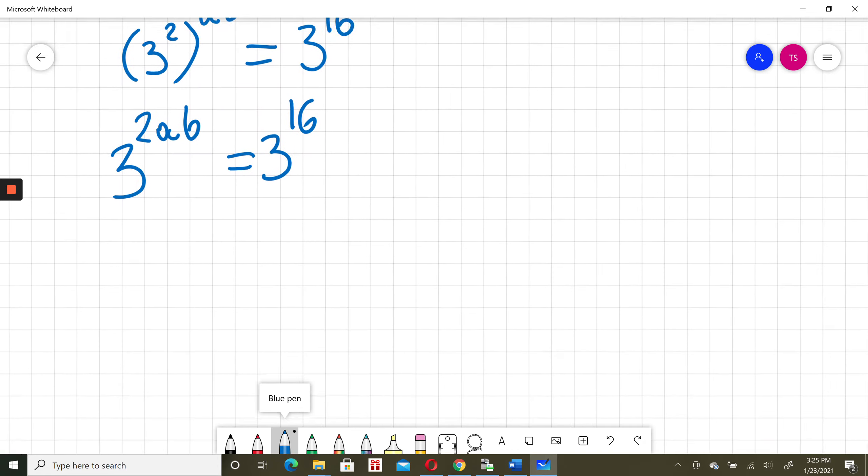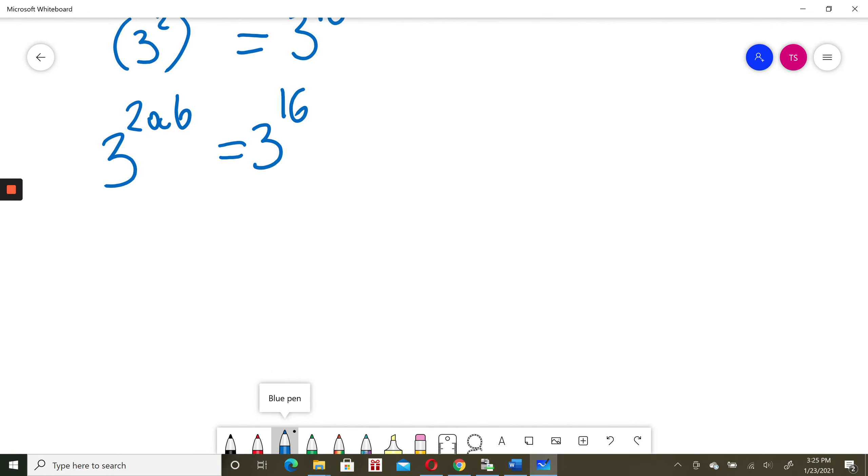At this moment base is the same, so I can just equal the powers, the exponents. 2ab must equal 16. I will simplify it by dividing both sides by 2. So ab will be equal to 8.